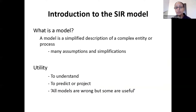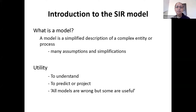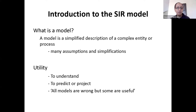I'm going to introduce you to the very first epidemiological model, developed back in the late 1920s, called the SIR model — S stands for susceptible, I stands for infected, and R stands for recovered. Before getting to it: what exactly is a model? A model is a simplified description of a complex entity or process. You make many assumptions and simplifications — it's not reality, you're not trying to capture 100% of reality, which would be impossible, but rather a simplified version of a complex process.